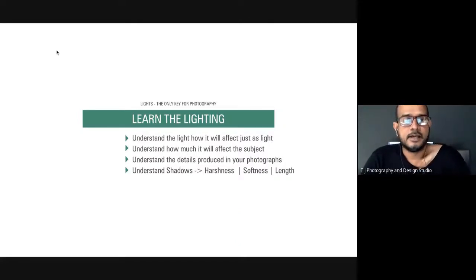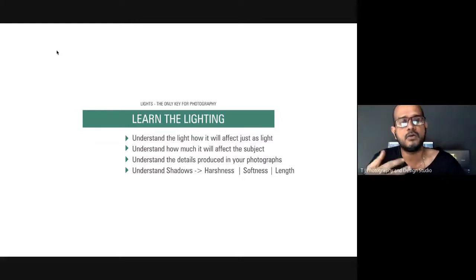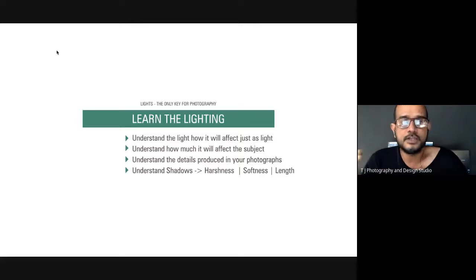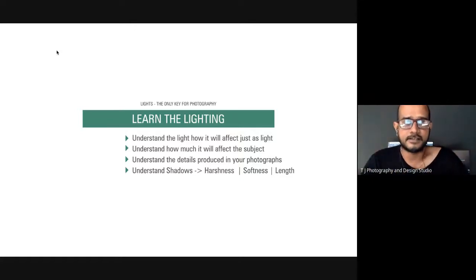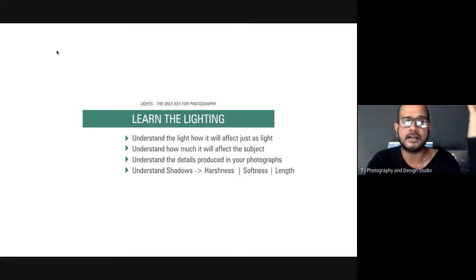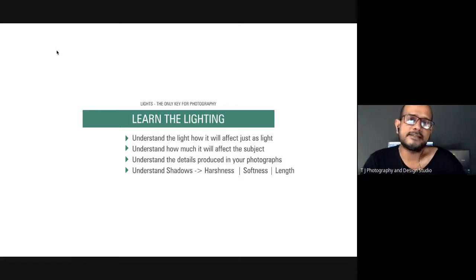Photography is all about light, but you need to learn about lighting — not just 'light.' You need to understand how light is going to impact the subject, space, or product. Whether you have an external light, speedlight, or no light — you should know how light is falling, from which side, and how it will impact your subject. Wherever you are sitting, observe how much light you have and how it behaves.